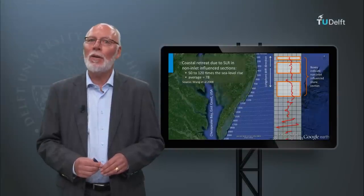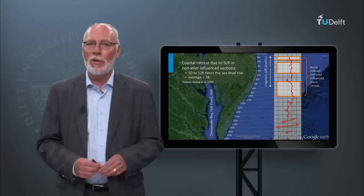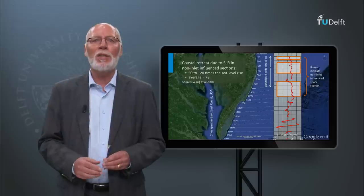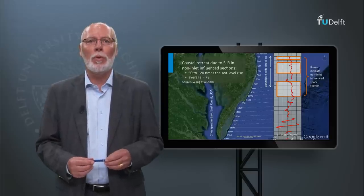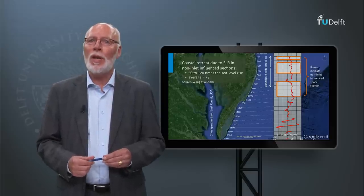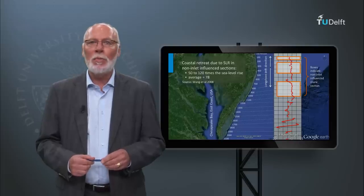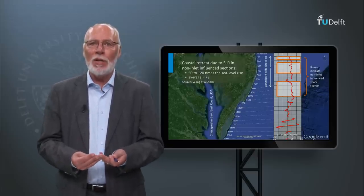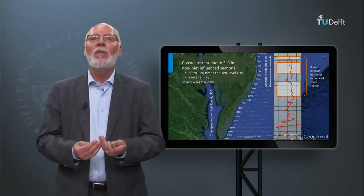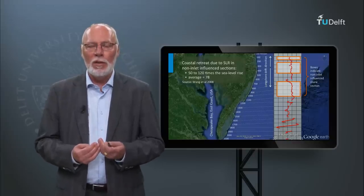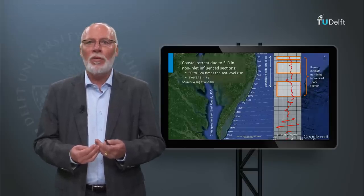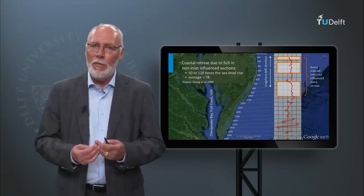Let us finally discuss the impact of sea level rise. Sea level rise creates a sediment budget deficit along our coasts. Along large stretches of coast not interrupted by inlets or tidal basins, we can apply the so-called BRUN rule. Based on the observation that the beach profile responds relatively fast, this rule implies that in response to sea level rise, the coast will retreat at roughly 50 to 100 times the amount of sea level rise. Hence, due to a sea level rise of 3 mm per year, a long stretch of coast will retreat at 15 to 30 cm per year.